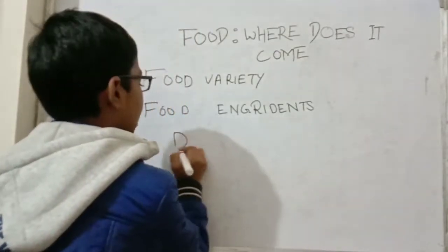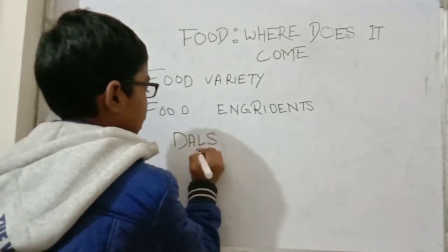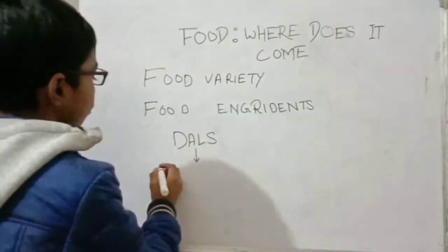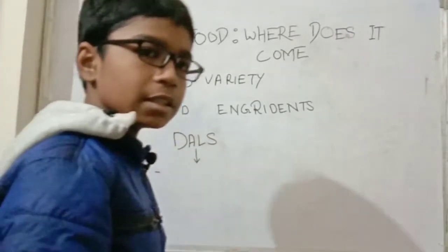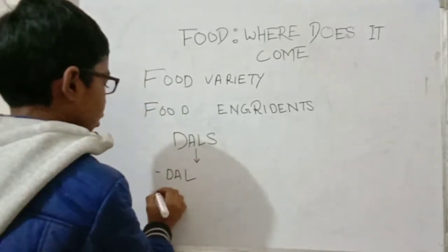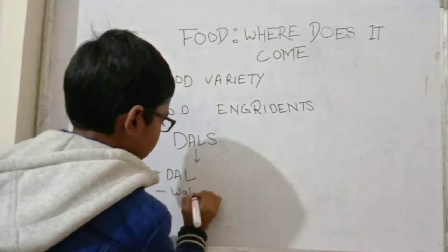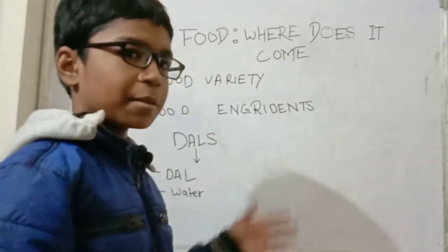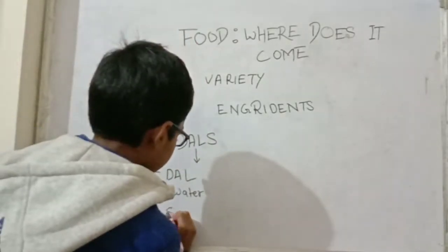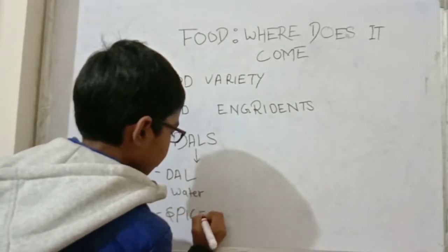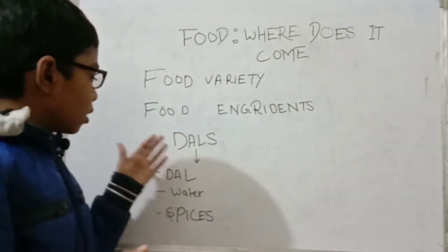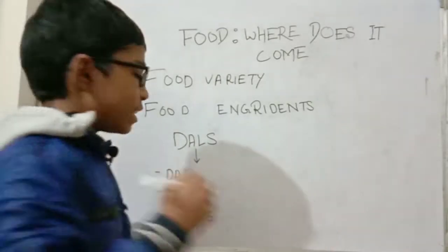To make dal, we need these food ingredients: first, obviously dal itself, then water, and other types of spices that are usually used to make dal tastier. These are the things needed to make dal — these are known as ingredients.